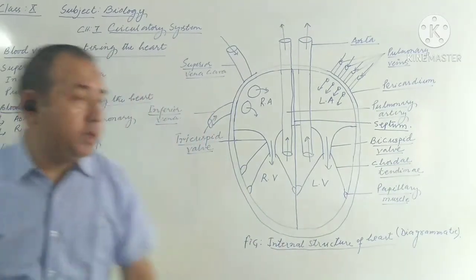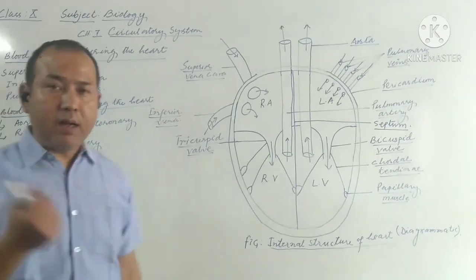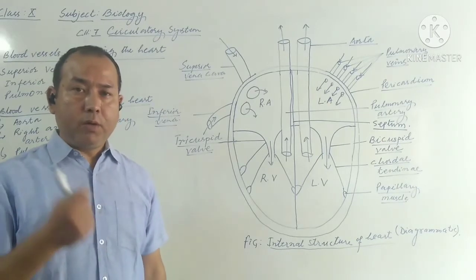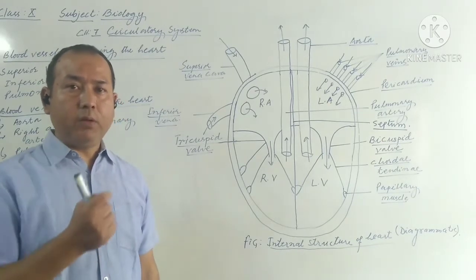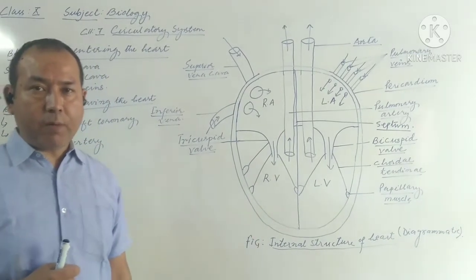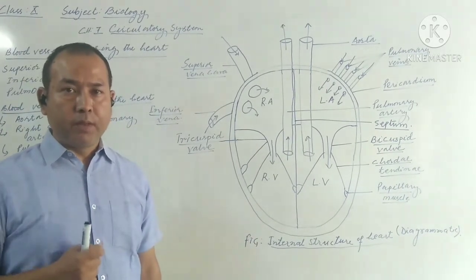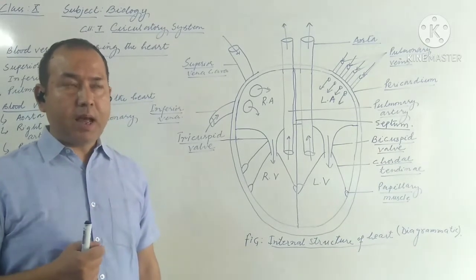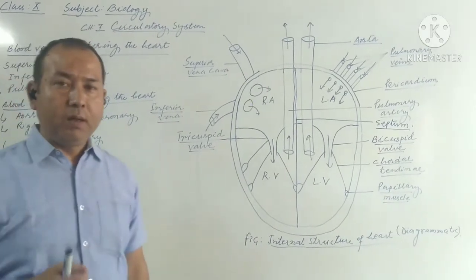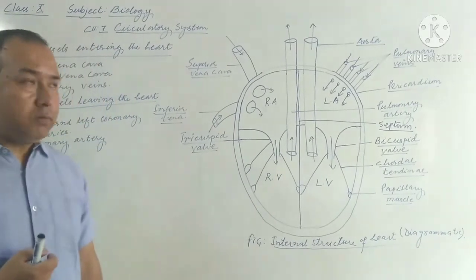I am here with a new topic: blood vessels entering into the heart and leaving the heart. Blood vessels entering the heart are those which carry blood from different parts of the body into the heart, while blood vessels leaving the heart take blood away from the heart.